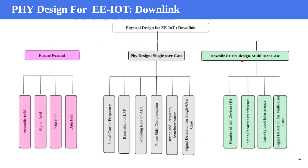The downlink physical design for the multi-user case includes K number of IoT devices. The single-user case focuses on the access point using a single subcarrier to serve only one IoT device. Here, they extended the downlink physical design to the case where the access point uses K number of subcarriers to serve K IoT devices. This also includes inter-subcarrier interference, inter-symbol interference, and signal detection for the multi-user case.